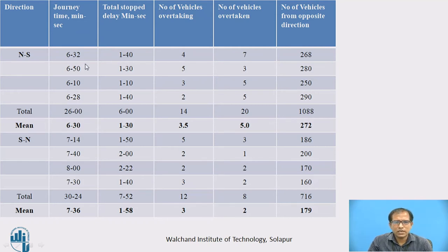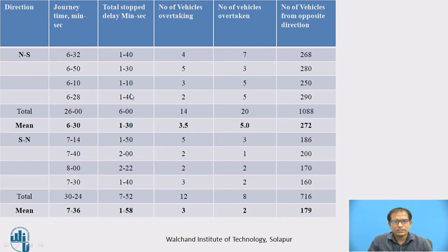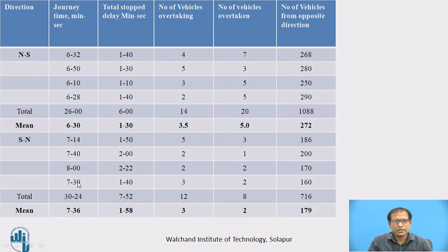For the north-south direction, add all the journey time values in seconds and divide by 60 to convert to minutes. Adding all seconds and dividing by 60 gives 26 minutes, then continuing to add minutes and seconds gives 1 minute 30 seconds increments. For the south-north direction, the total is 30 minutes 24 seconds and the mean is 7 minutes 36 seconds, with a stopped delay mean of 1 minute 58 seconds and opposite vehicle count of 179.